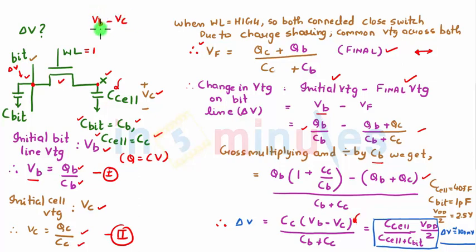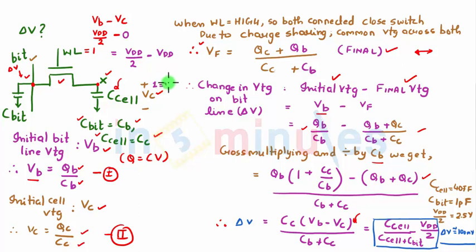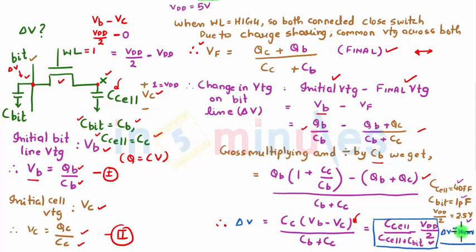Now, what is V_B − V_C? Initially we make the bit line VDD/2 for the read operation, so V_B = VDD/2. If a 0 is stored in C_cell, V_C = 0, giving V_B − V_C = VDD/2. If a 1 is stored, V_C = VDD, giving V_B − V_C = VDD/2. In both cases the difference is VDD/2. So delta V = C_cell / (C_B + C_C) × VDD/2. With C_cell = 40 fF, C_bit = 1 pF, and VDD/2 = 2.5 V, we get delta V ≈ 100 mV.